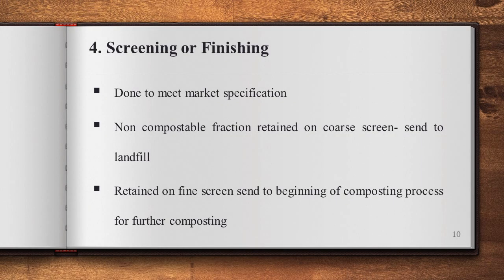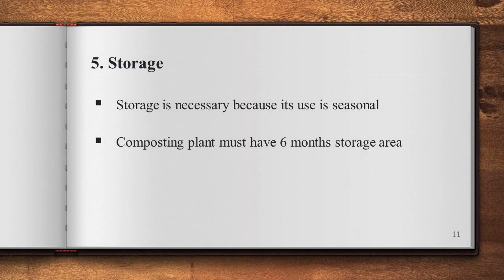The fourth stage is Screening or Finishing, done to meet market specifications. Non-compostable fractions retained on the coarse screen are sent to landfill for disposal. Material retained on the fine screen is sent back to the beginning of the composting process for further composting. Finally, the fifth stage is Storage, which is necessary because compost use is seasonal. A composting plant must have a six-month storage area.